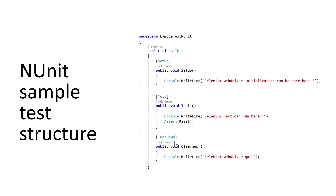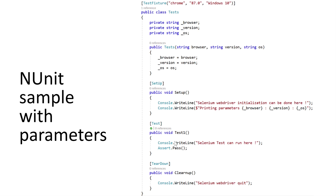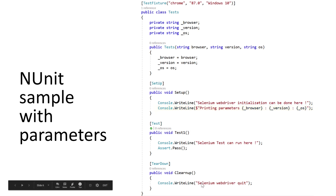If we have a fixture-level or parameter-level setup within our NUnit test, the code looks something like this. Within the test we have a TestFixture with different parameters — like the browser (Chrome), the browser version, and the operating system (Windows 10). These parameters are consumed within the properties of the class file, and the properties are assigned values based on the order specified within the TestFixture.